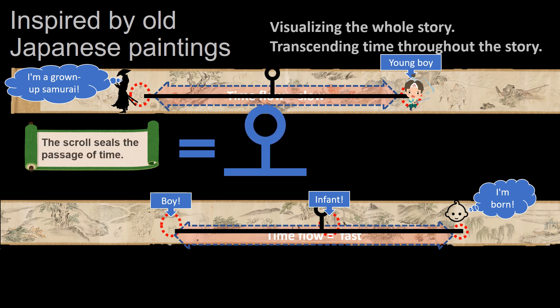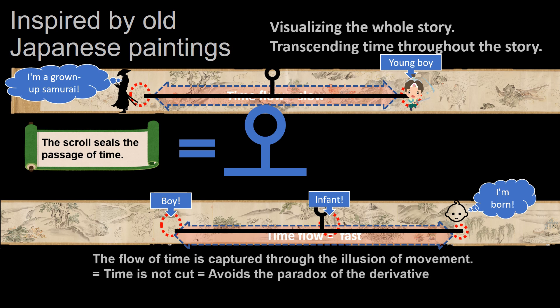The scroll seals the passage of time. The flow of time is captured through the illusion of movement. Time is not cut. Avoid the paradox of the derivative.